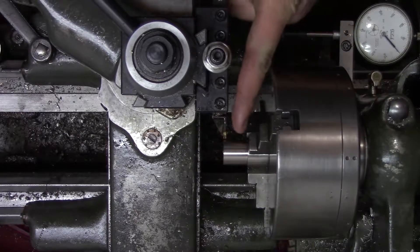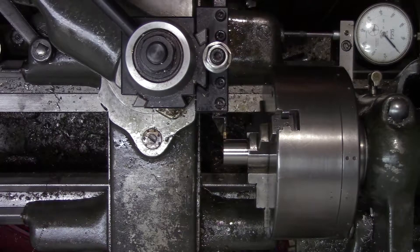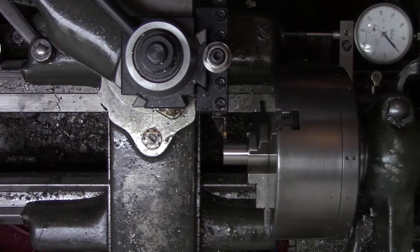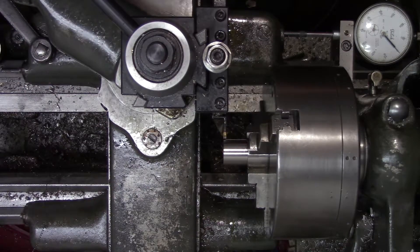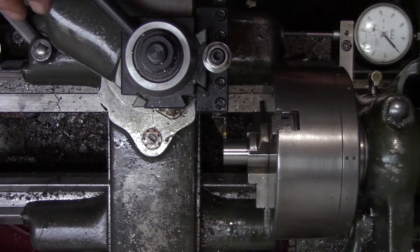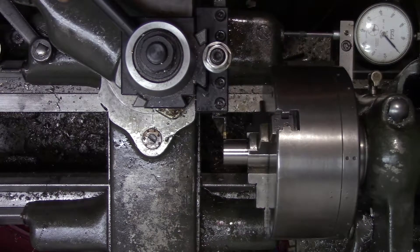Alright, now we're going to use the grooving tool to part off the crank discs. I already have the edge of the tool set to the end of the work. Now we're going to move over 3/16ths of an inch, actually a little bit more than that, so I can do a facing pass on the other side, and we'll part them off.